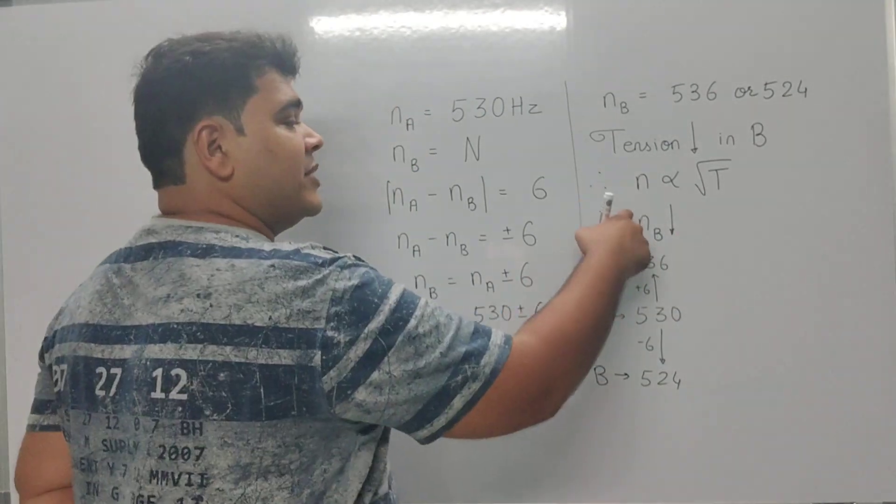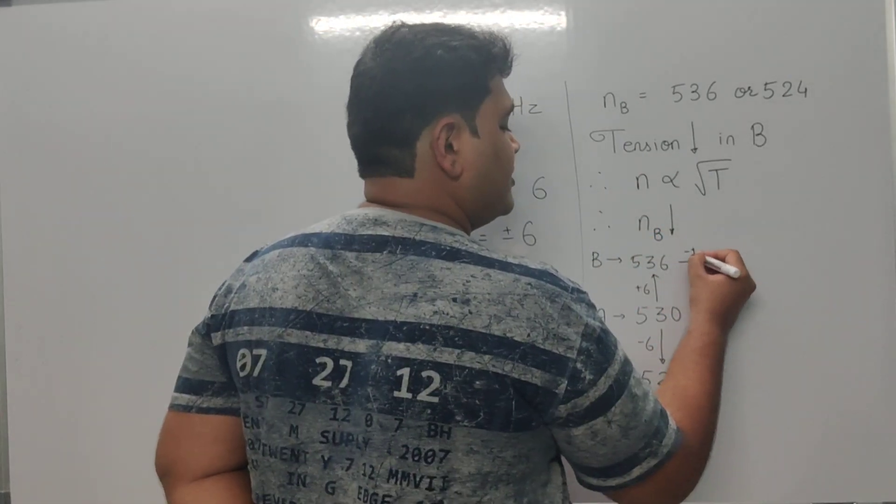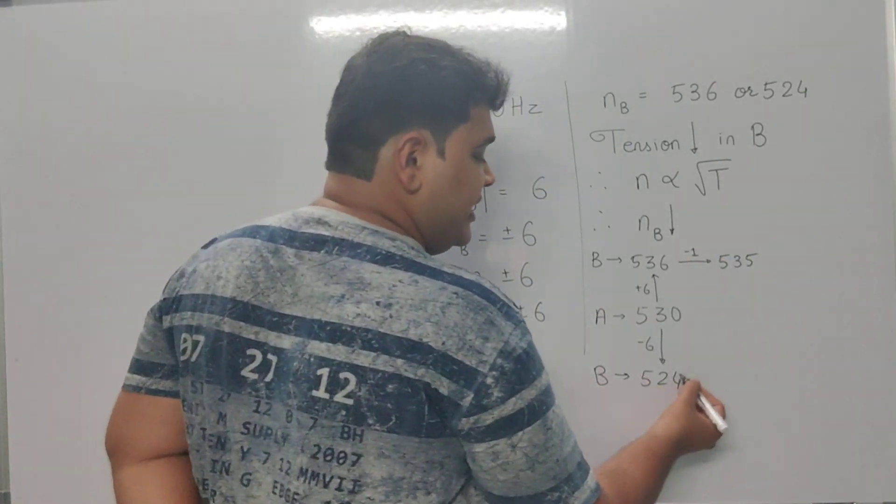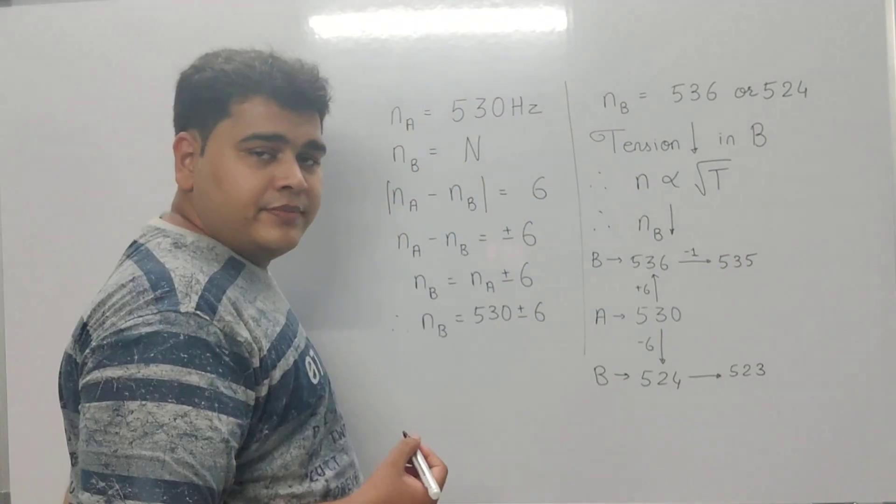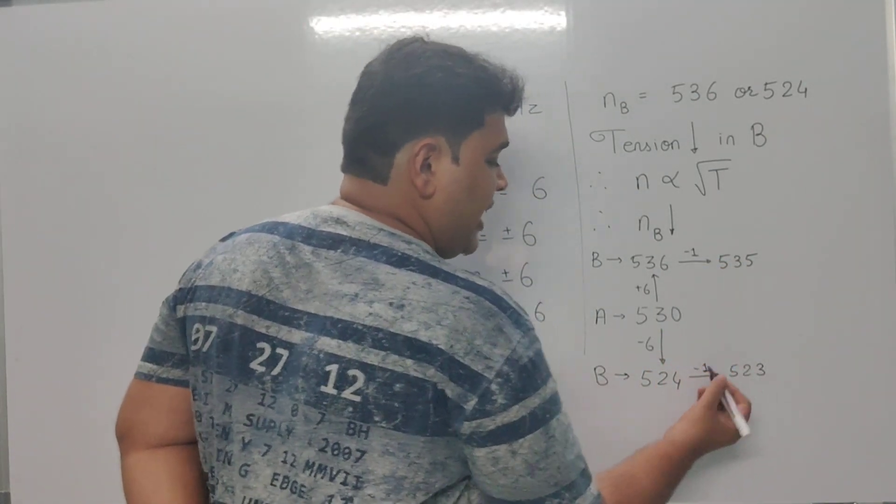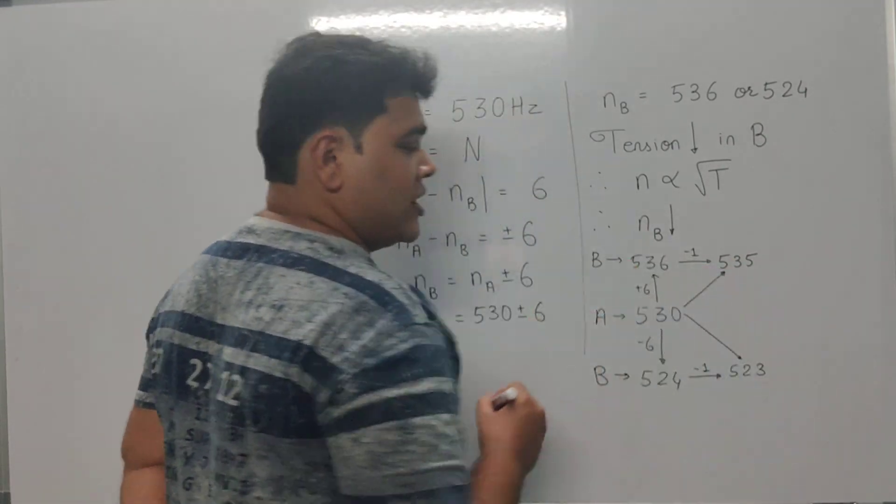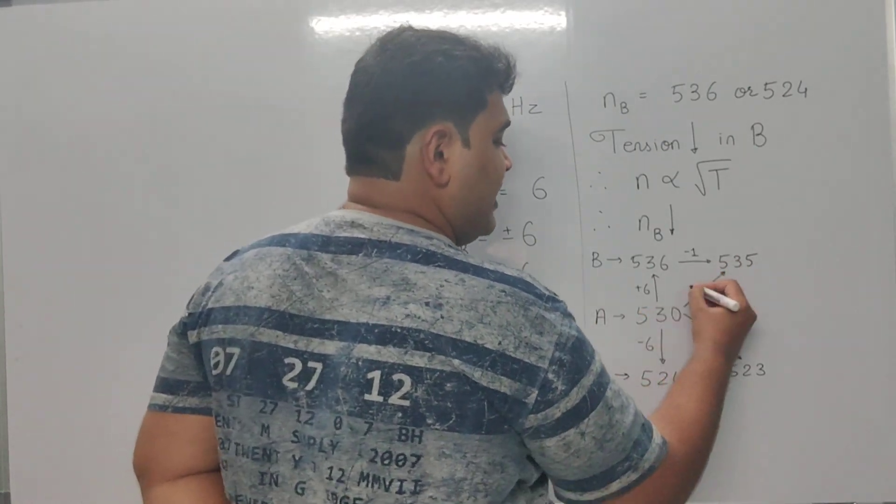Since the frequency of B is decreasing, I decrease the value of 536 by 1 to get 535, and I decrease the value of 524 by 1 to get 523. Now I find what happens to the new beat frequency.